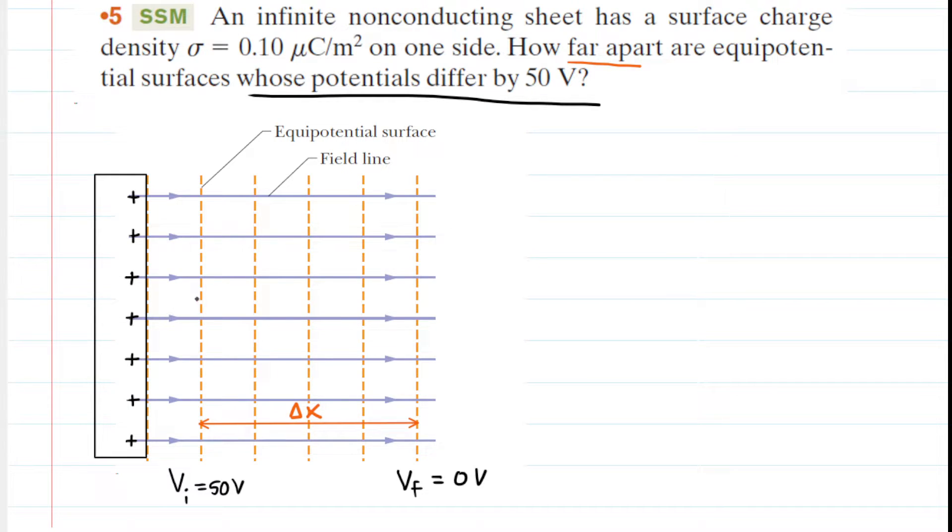We've learned in this chapter that if you have a uniform electric field, which is exactly what we have here because of this infinite non-conducting sheet, then the potential difference delta V is going to equal the negative of the electric field multiplied by delta x. We have delta x here. We can solve for delta x by dividing both sides by negative E. And this is our expression for delta x.